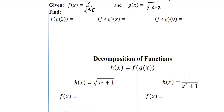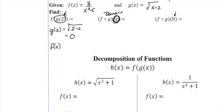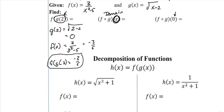Here we have two new functions: f(x) = 3/(x² − 5) and g(x) = √(x − 2). When evaluating at a number, I don't really need to worry about domain — the number itself will tell me if it works. Let's put 2 into g: g of 2 is the square root of 2 minus 2, which equals 0. Then plug 0 into f: 3 over 0 squared minus 5, which equals negative 3 fifths. So f of g of 2 equals negative 3 fifths.